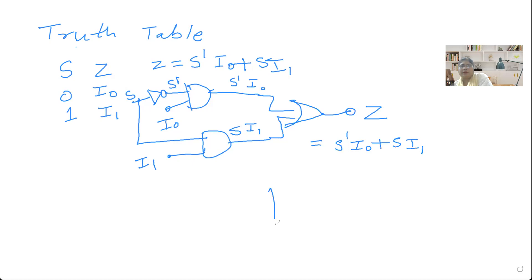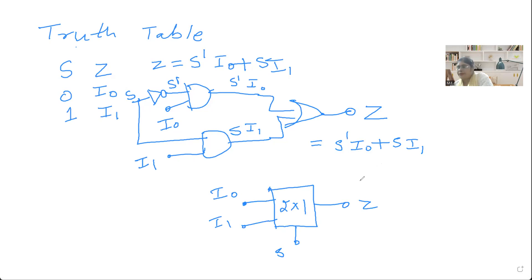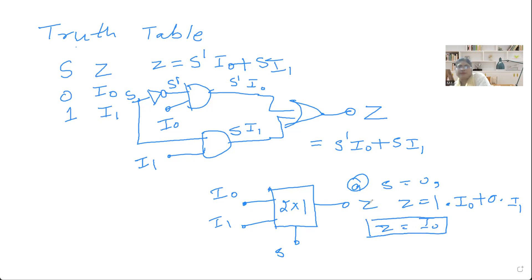So this is the 2-to-1 multiplexer block where two inputs I0 and I1 are present, one select line S, and output Z. Inside this box the logic diagram is present. If the value of S is equal to 0, then the complement is 1, so Z equals 1·I0 plus 0·I1, which gives Z equal to I0. This confirms that if S equals 0, I0 will be connected to the output.